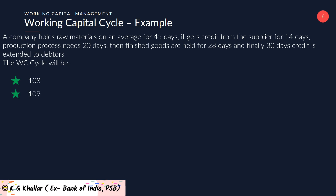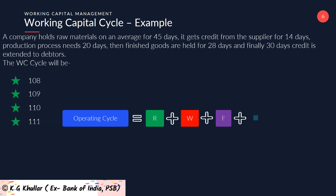The working capital cycle equals R + W + F + D − C. So R, the raw material storage period, is 45 days; W, the work in progress holding period, is 20 days; F, the finished goods storage period, is 28 days; D, the debtors collection period, is 30 days; and C, the credit period allowed by suppliers, is 14 days. Putting all these values in the equation: 45 + 20 + 28 + 30 − 14, which equals 109 days. So the total working capital cycle of this firm is 109 days.